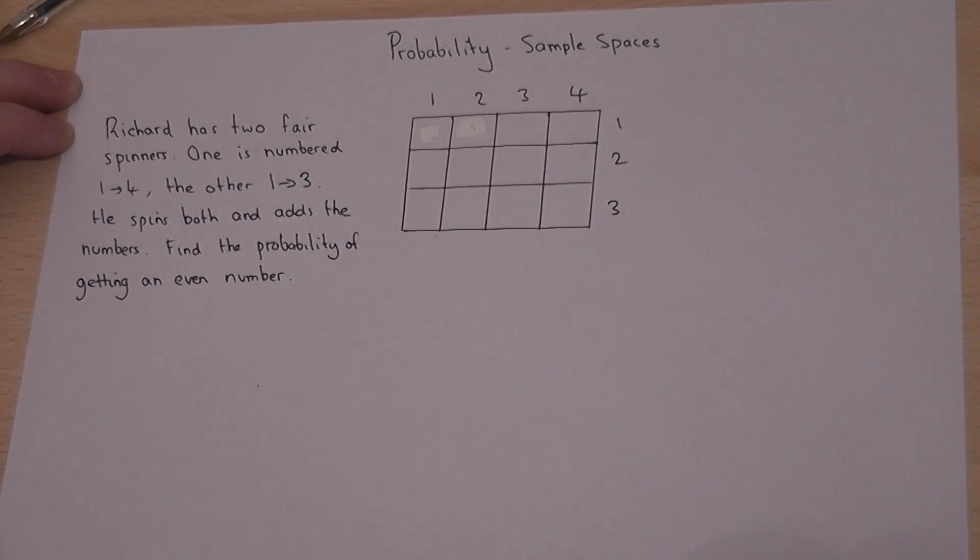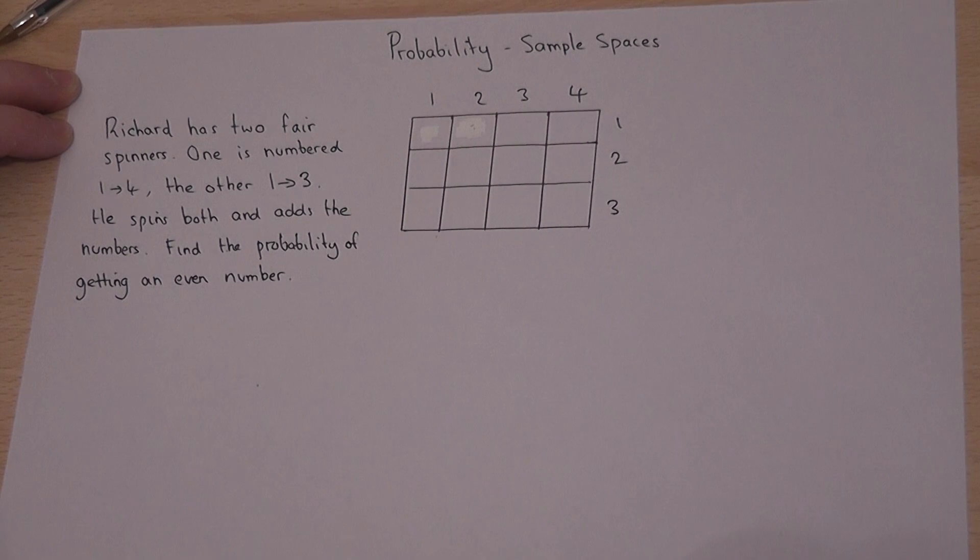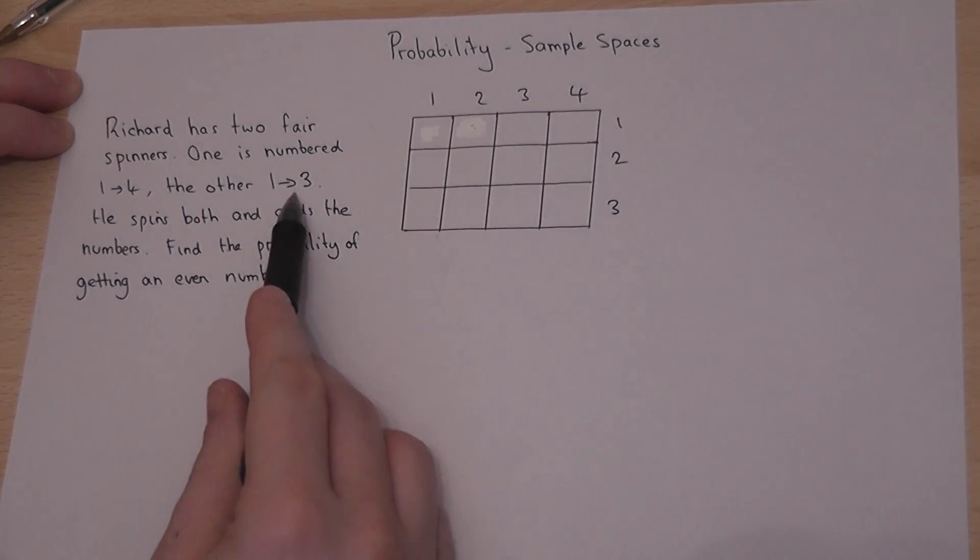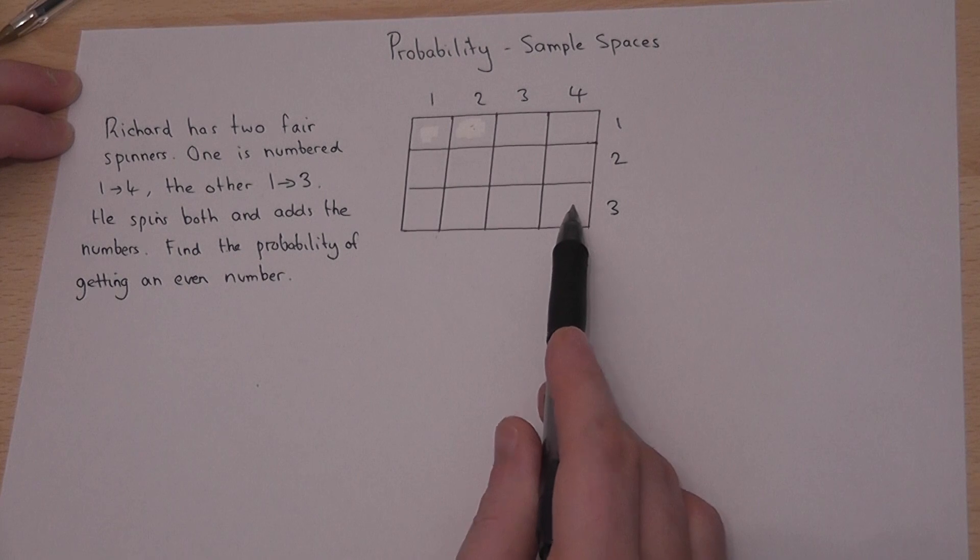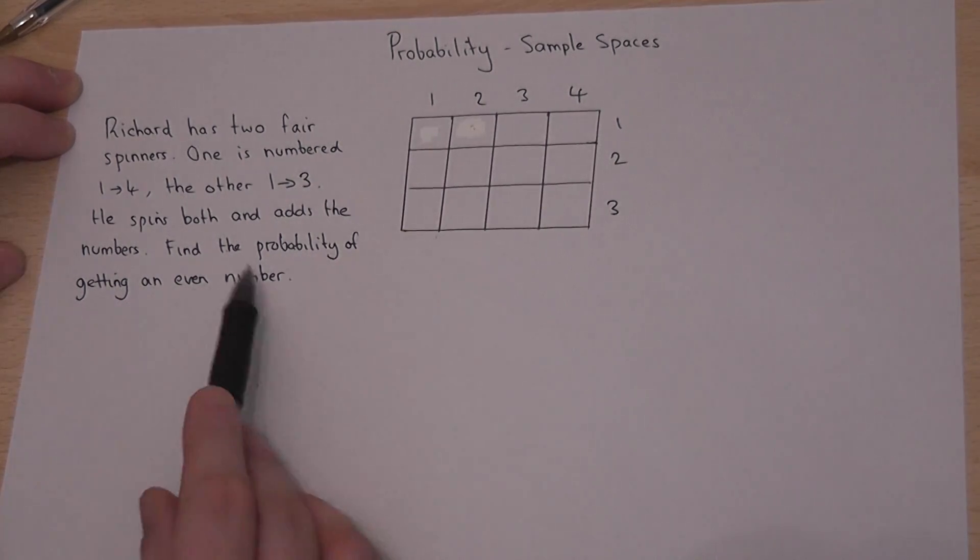This video is a typical sample space question. Richard has two fair spinners. One is numbered from one to four. The second spinner is from one to three. Richard spins both and adds together the scores to get a new number. What's the chance that Richard gets an even number?